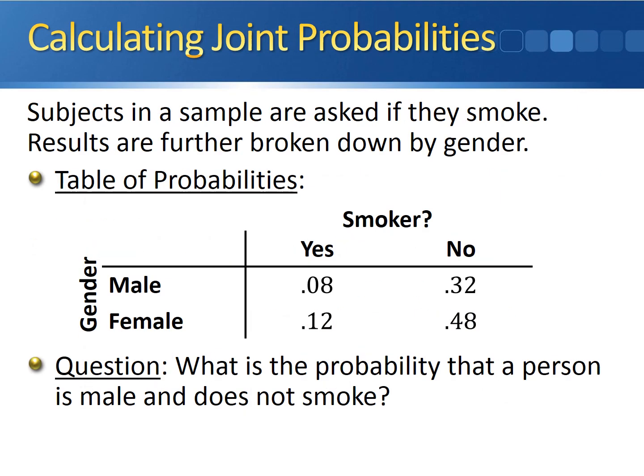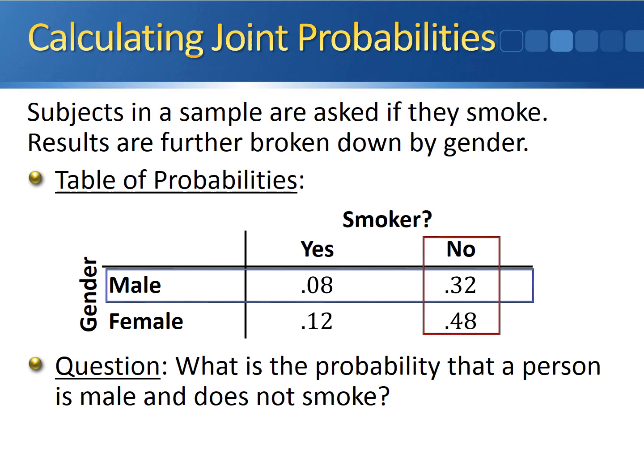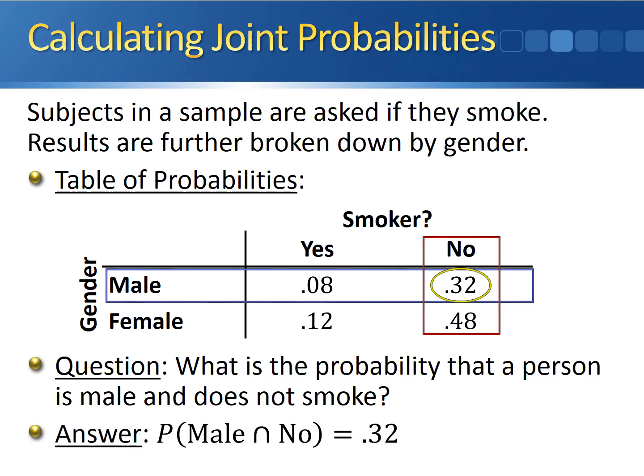Here's an example of calculating joint probabilities using a table. We take a sample of people and ask whether they smoke, and we also break down results by gender. We want to know the probability that a person is male and does not smoke. We find the row for male and the column for non-smoker. The place where this row and column intersect gives us the joint probability — in this case, male and non-smoker intersect at 0.32. So the probability that a person is male and does not smoke is 0.32.